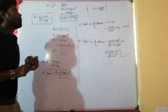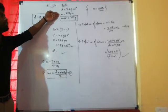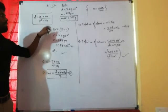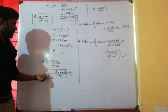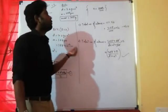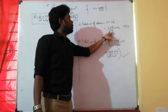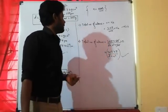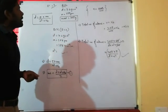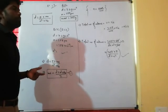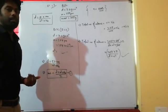So for this 3-mark question: BCC unit cell with density 7.2 g/cm³, edge length 288 pm, and mass 208 g. Convert a from picometers to centimeters, use the density formula to find m₀, then use the mole concept where total atoms equals small n into Nₐ. Calculate all the values. The next class will continue with coordination number. Thank you.